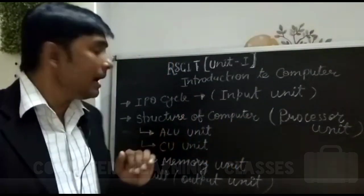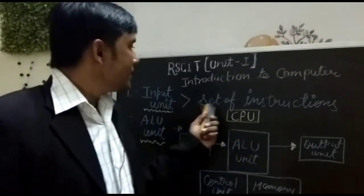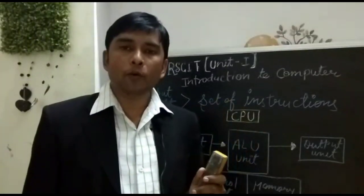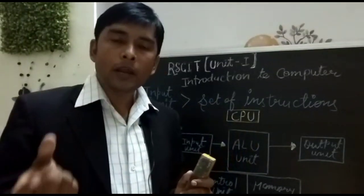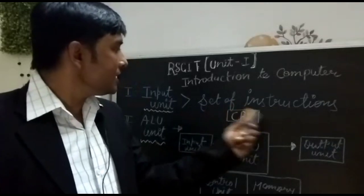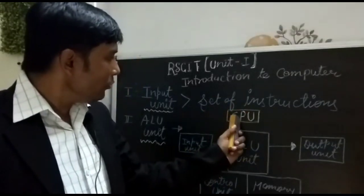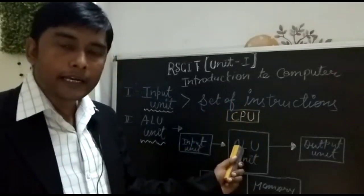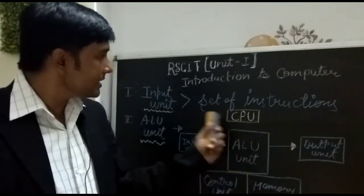You will also know the name of this. Guys, first of all our input unit which means that we have set of instructions. I have also told you that it is set of instructions which means that the user sends to the computer then the set of instructions is from the input unit. The user can send the instruction to it. So this instruction reaches the input unit.